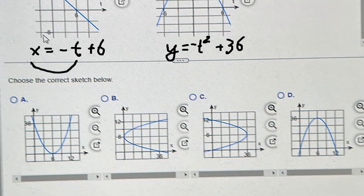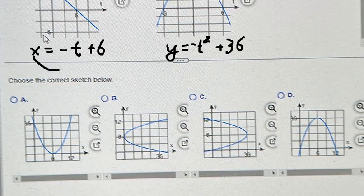So we put negative t to the left, x to the right. So we have t equals to 6 minus x. And we put this one to change for t in here.